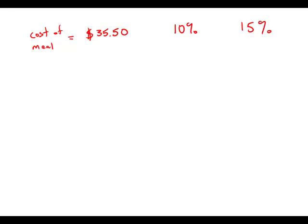So here we're going to use a lot of estimation. We don't have a calculator, so we're going to just estimate. I'm going to estimate 10% of this amount as just $3.50. And so if I add $35.50 plus $3.50, that is $39.